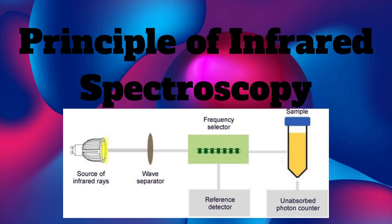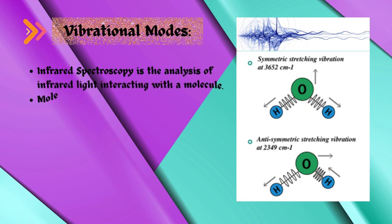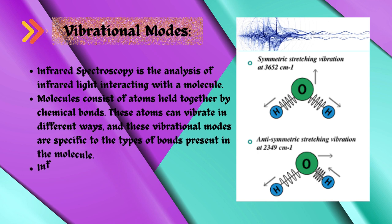Principle of Infrared Spectroscopy. Vibrational Modes. Infrared spectroscopy is the analysis of infrared light interacting with a molecule. Molecules consist of atoms held together by chemical bonds. These atoms can vibrate in different ways, and these vibrational modes are specific to the types of bonds present in the molecule.